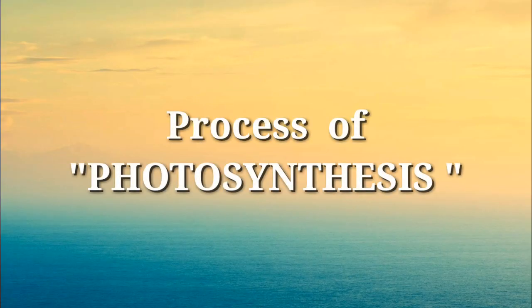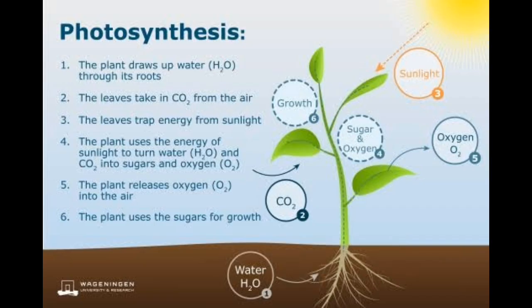The process of photosynthesis can take place in six steps: first, the plant draws up water from the roots; second, the leaves take in CO₂ from the air; third, the leaves trap energy from sunlight; fourth, water and carbon dioxide are turned into sugar and oxygen; fifth, the plant releases oxygen into the air; and sixth, the plant uses the sugar for growth.